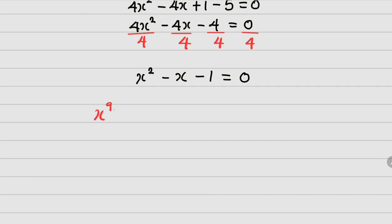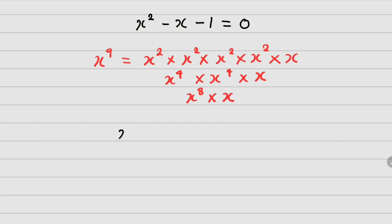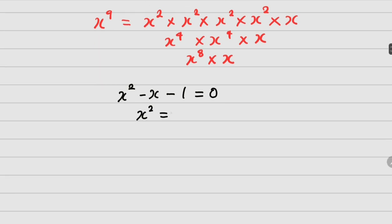Do you know that x raised to power 9 can actually be written as x squared times x squared times x squared times x squared times x squared times x? This is the same as x raised to power 4 times x raised to power 4 times x, which equals x raised to power 8 times x. So if I can get an expression for x raised to power 4, then I can get an expression for x raised to power 8, making it simpler to solve. From x squared minus x minus 1 equals 0, I get x squared equals x plus 1.